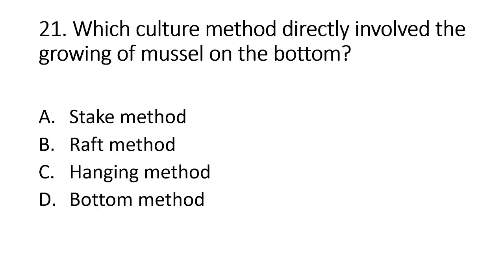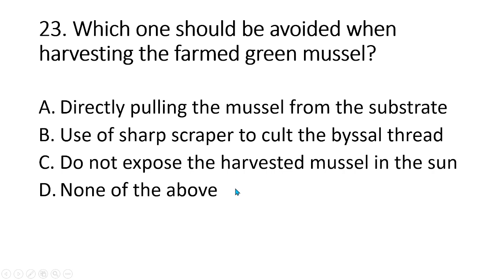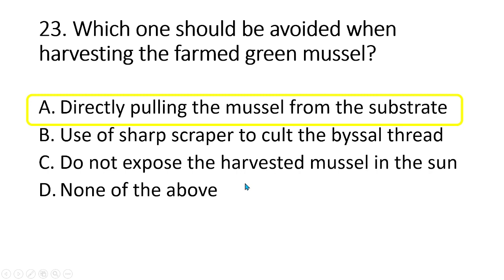Number 21. Which culture method directly involves the growing of mussel on the bottom? A. Stake method. B. Raft method. C. Hanging method. D. Bottom method. The answer is letter D, bottom method. Number 22. Cultured mussel can reach 5–10 cm after which months? A. 2–4 months. B. 5–7 months. C. 6–10 months. D. 8–9 months. The answer is letter C, mussels can reach 5–10 cm in 6–10 months of rearing. Number 23. Which one should be avoided when harvesting the farmed green mussel? A. Directly pulling the mussel from the substrate. The answer is letter A, directly pulling the mussel will damage the byssal thread and the flesh of the mussel, which will result in loss of moisture and death.